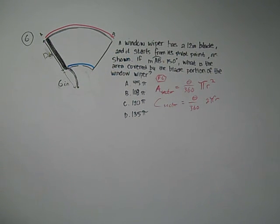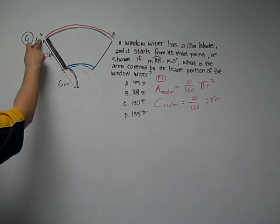So the radius of the outer circle is not 12. The radius of the outer circle is 18.